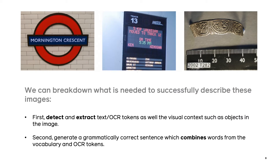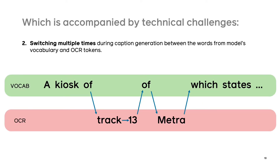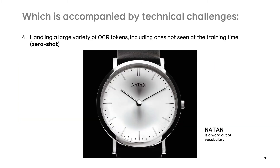It's easy to understand, since this is actually quite a difficult task. The model needs first to detect and extract text from the scene, as well as visual properties of the objects, and then combine this information and generate a grammatically correct description. There are technical challenges, such as understanding relations between multiple OCR tokens — their location, color, font, size or other properties. The model needs to switch multiple times between vocabulary words and OCR tokens, and may even need to paraphrase the text and infer information from it, as often happens in natural language. The model also needs to be able to read new text from images which was not present in the training set, such as zero-shot.